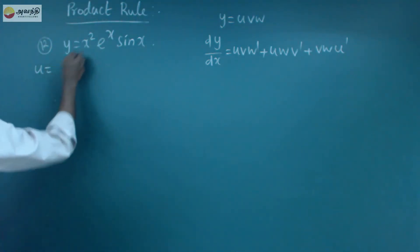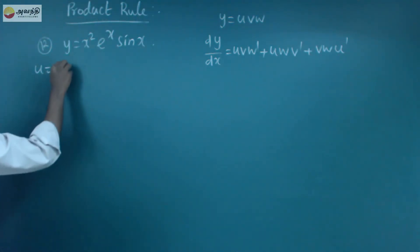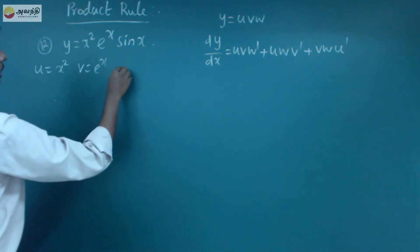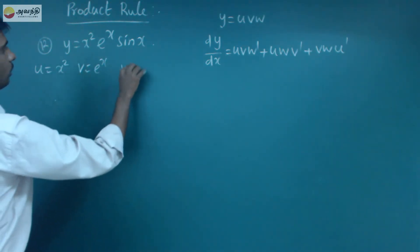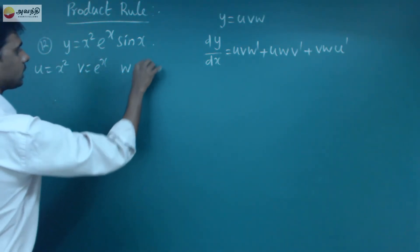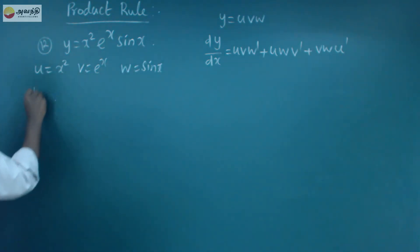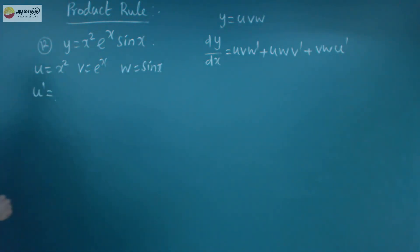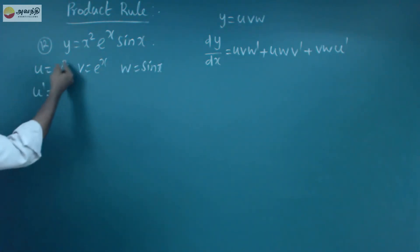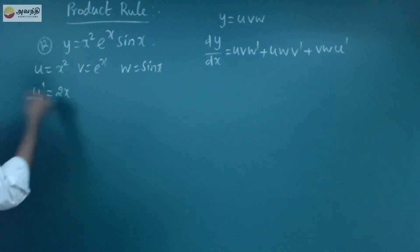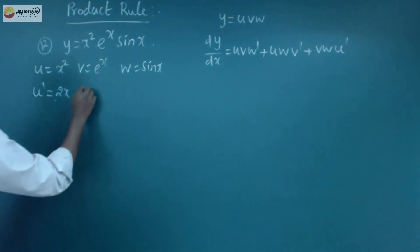u is equal to x squared, v is equal to e power x, w is equal to sin x. So u dash — differentiation of x squared: bring 2 to the front, 2x, power 2 minus 1 equals 1, that's why u dash equals 2x.